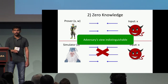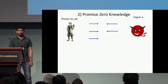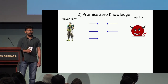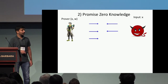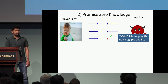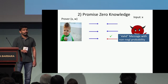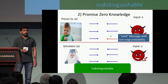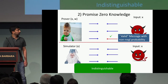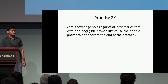We cannot achieve this strong notion of zero knowledge in just three rounds, so we relax it in our new definition of Promise ZK. Suppose the first two rounds of protocol execution have completed. The adversary is rushing, so it waits for the prover's third-round message before responding. If the adversary sends a third-round message that is valid with some non-negligible probability — where validity is defined by the protocol as a function of the entire transcript — then the guarantee is that its view should be indistinguishable in the real and ideal worlds. In other words, the zero-knowledge property holds only against adversaries that with non-negligible probability do not cause the honest prover to abort.